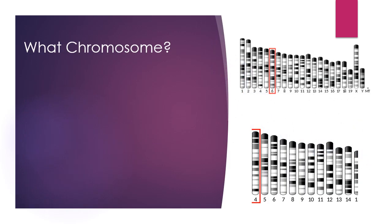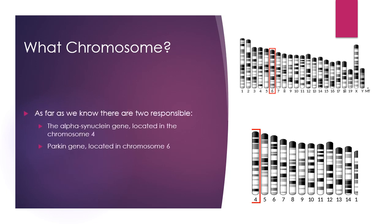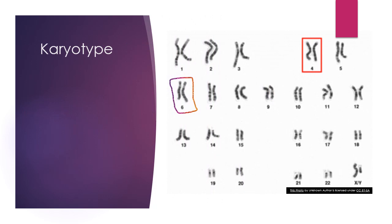What chromosome in particular is responsible for this? As far as we know there are two responsible: the alpha-synuclein gene located on the fourth chromosome, and the parkin gene located on the sixth chromosome. Here is the karyotype for Parkinson's and the chromosomes that are affected — the fourth one and the sixth one.